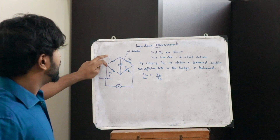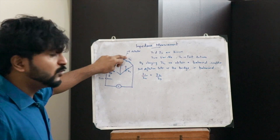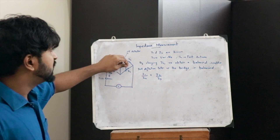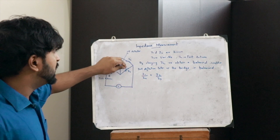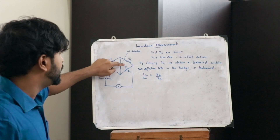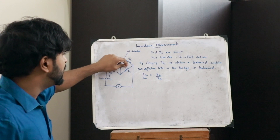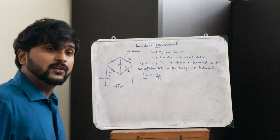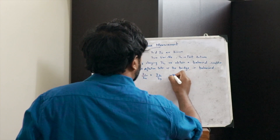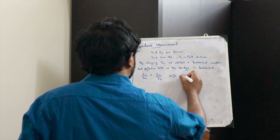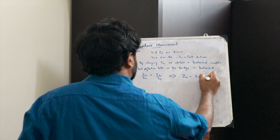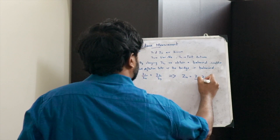Since the values of Z1 and Z2 are known, and the value of Z3 is also known — as we have adjusted this impedance to the point where the null deflection is obtained — therefore the value of Z4 is equal to Z1 times Z3 divided by Z2.